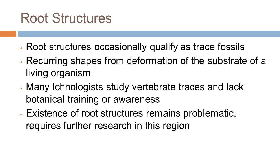Furthermore, the analysis from the Favignana Island study indicates that root structures qualify as trace fossils because they are structures of recurrent shapes, resulting from deformation of the substrate by a living organism. However, the taphonomy of a plant's roots is poorly understood and fossil record classification is still underdeveloped. Therefore, ecologists and paleontologists continue to waver when interpreting plant root structures and hesitate to classify them as trace fossils.